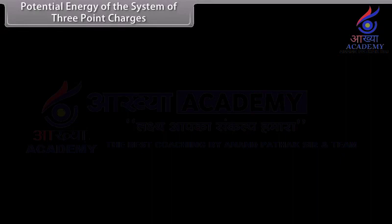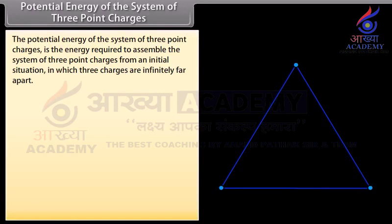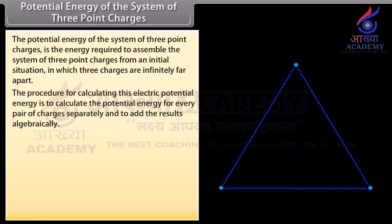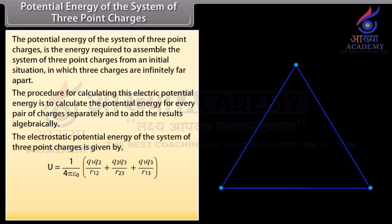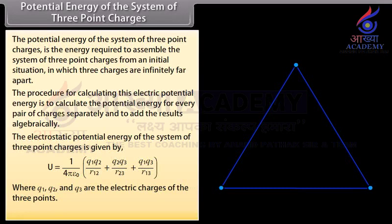Potential energy of a system of three point charges: This is the energy required to assemble three point charges from an initial situation where they are infinitely far apart. The procedure is to calculate the potential energy for every pair of charges separately and add the results algebraically. The electrostatic potential energy is U equals 1 upon 4πε₀ multiplied by (Q₁Q₂ upon R₁₂ plus Q₂Q₃ upon R₂₃ plus Q₁Q₃ upon R₁₃), where Q₁, Q₂, Q₃ are the charges and R₁₂, R₁₃, R₂₃ are their separation distances.